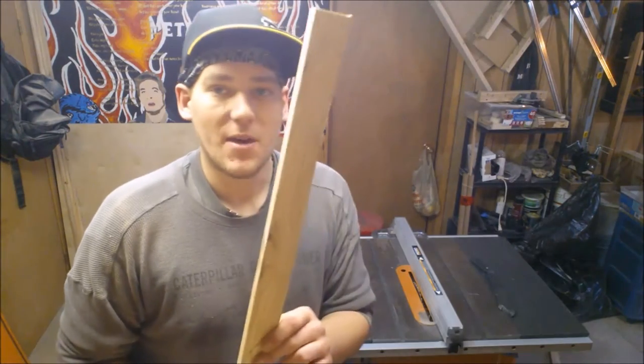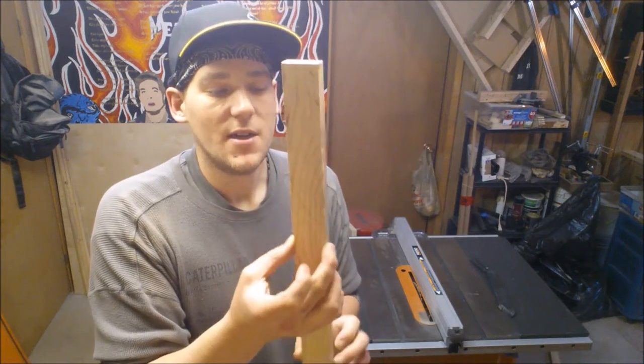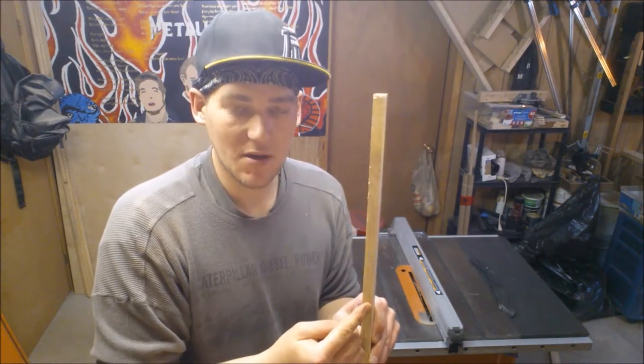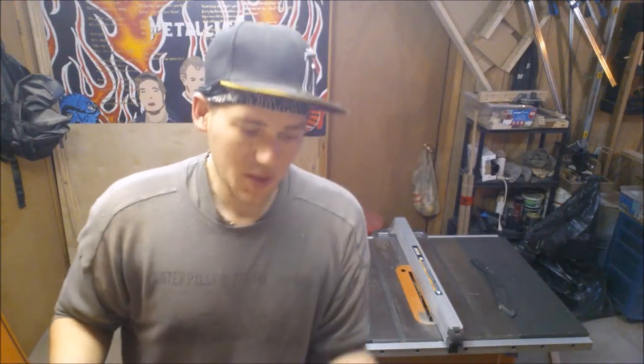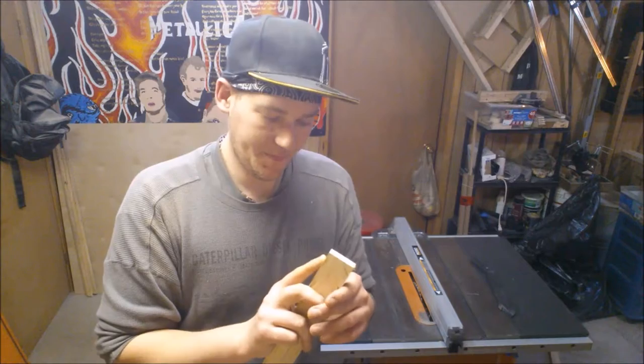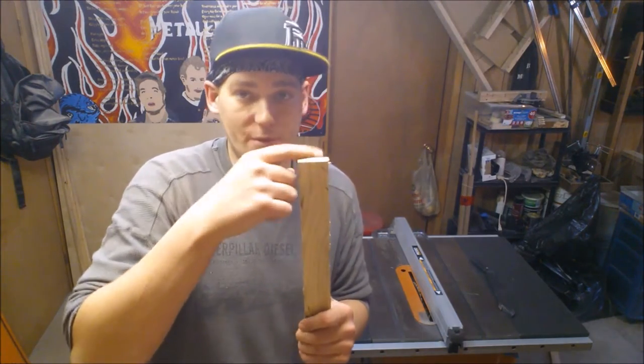A dado will be put down the middle that will accept the mirror, so the mirror will just slide into that dado. I'm going to do a half-lap joint for the corners of the frame. The shelving itself will be about three inches wide from the wall, just so you can put aspirin bottles and whatever people keep in their vanity mirrors.